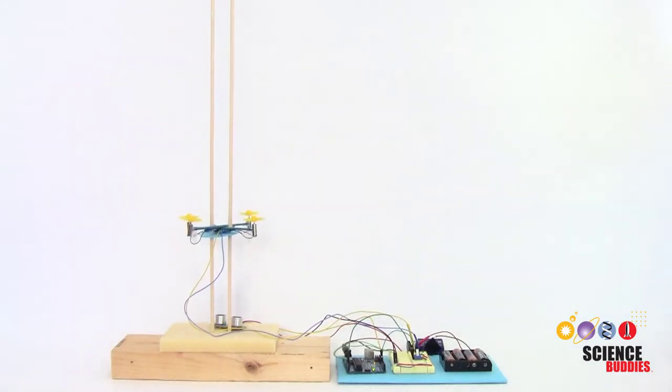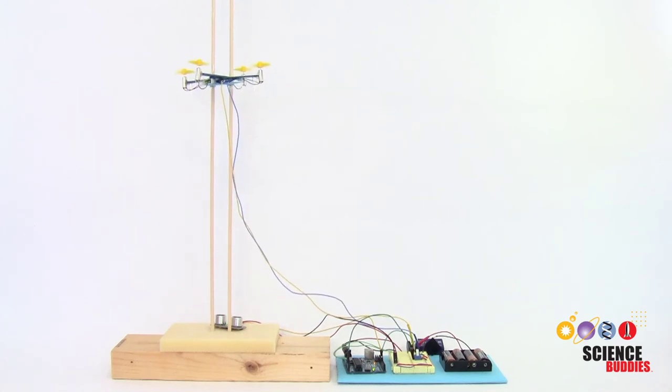You can also use the same circuit to make the drone automatically follow a pre-programmed path. For example, here it automatically oscillates up and down with no input from a human.